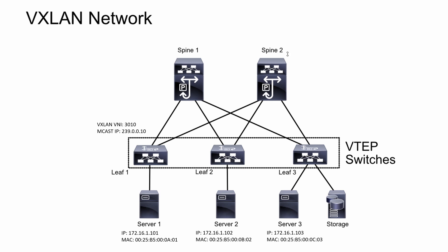Let's take a look at an example of how the flood and learn technique works. Here we have a spine-leaf topology and everything is within the same VNI, 3010, just for simplicity's sake. Server 1 wants to contact server 2 and it needs to know the MAC address, so it sends that on to leaf 1. Leaf 1 checks its MAC address table, realizes it doesn't know where that is, converts it into a VXLAN packet, and sends it out to the multicast IP address for that particular VNI. The multicast route processor then forwards that on to all of the other switches involved with that multicast IP.